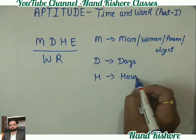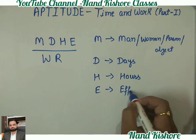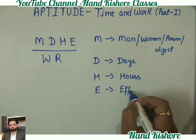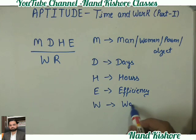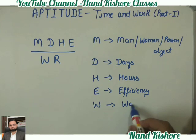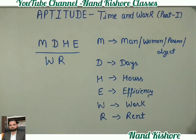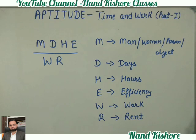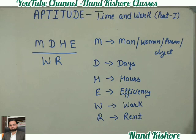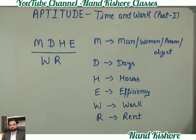H will be used for hours — कहीं question में अगर hours use होंगे तो H का इस्तेमाल करेंगे। E — किसी तरह की efficiency अगर हमें काम की दे रखी हो तो we are going to use E. W will be used for any kind of work which is given, और R will be used for rent. M, D, H, E — इन चारों में से जो भी given होगा उसे हम numerator में रखेंगे। W और R अगर कहीं भी given होगा उसे हम denominator में रखेंगे।